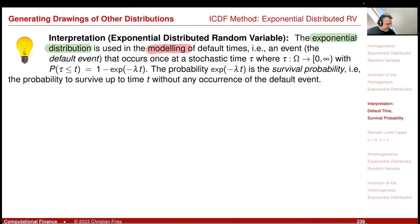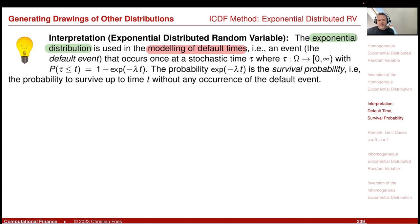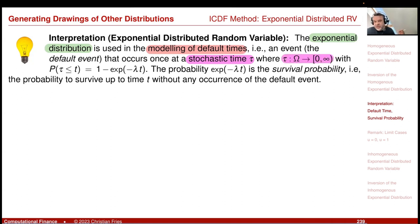This models an event that can occur with a certain probability. The random variable x is actually a time, so I often use the letter tau. It is a stochastic time mapping omega to [0, infinity), and the probability of being below zero is zero. So tau represents when the event happens, with zero being just now.